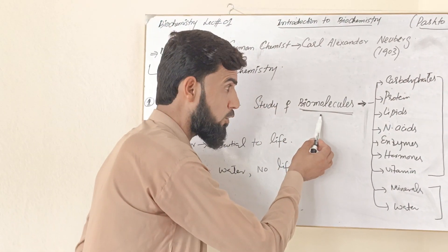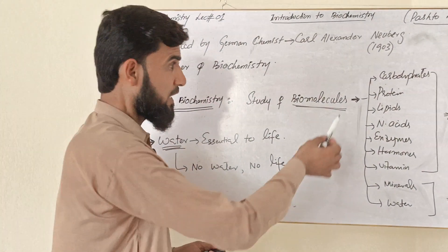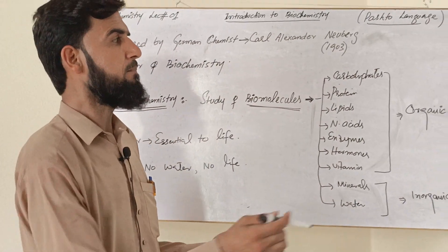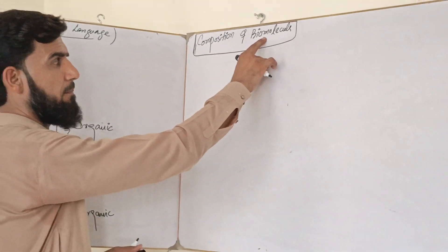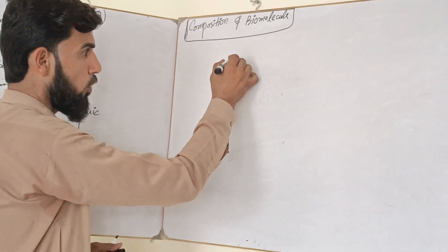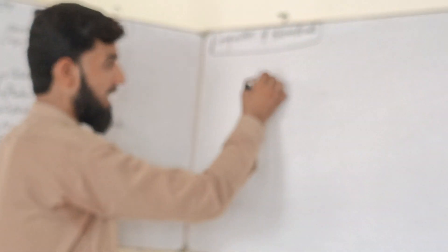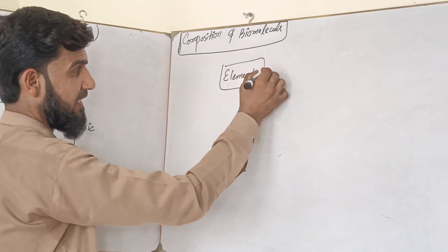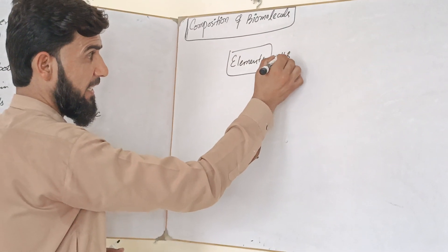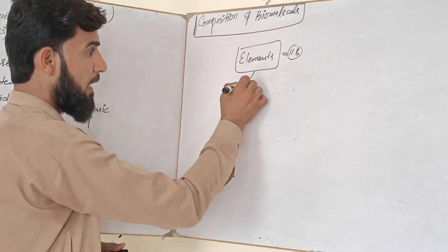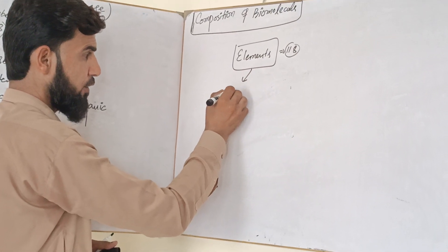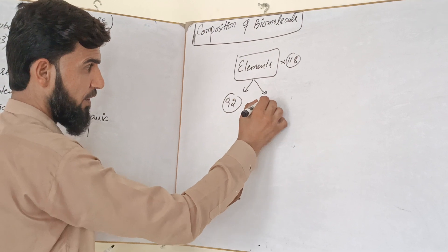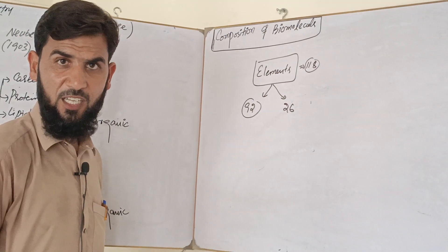Regarding the composition of bio-molecules: there are a total of 180 elements, of which 92 are naturally occurring and 26 are artificial or synthetic.